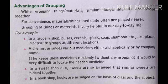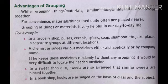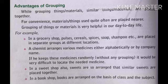Advantages of grouping: similar things or materials are placed together for convenience, and materials used often are placed nearer. Grouping is very useful in day-to-day life — in a grocery shop, pulses, cereals, spices, soap, and shampoo are placed in separate groups. At a chemist, medicines are arranged alphabetically or by company name. In a bookshop, books are arranged by class or subject. I think everyone now understands Chapter 4: Sorting Materials into Groups.